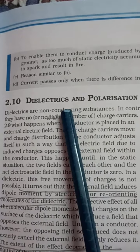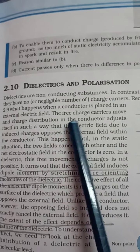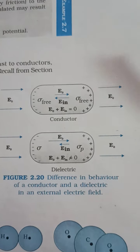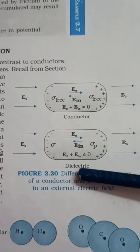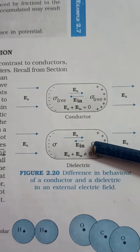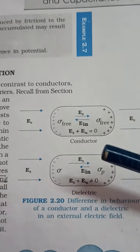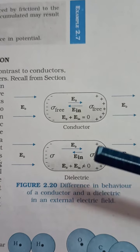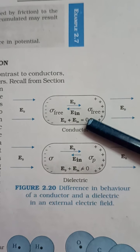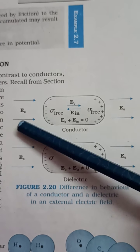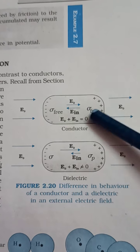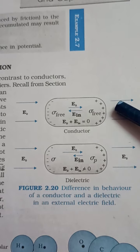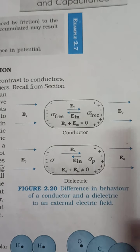We are studying both conductor and non-conducting substances. With these two diagrams, you will be able to understand the difference. What is the effect of an external field on a conductor, and if we use a non-conductor — that is called a dielectric — then what is the effect on it? We place a conductor in a uniform external field.